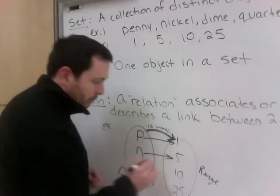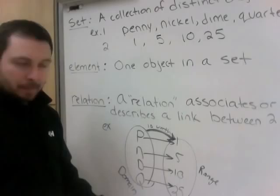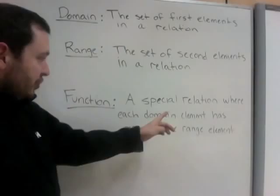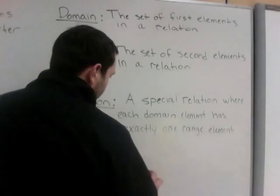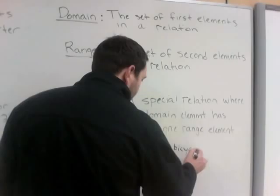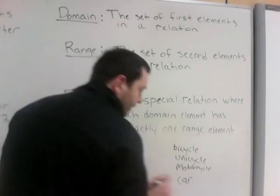Next is a function. A function is a special relation where each domain element has exactly one range element. We can see that with our coins: a penny is worth one cent, a nickel is worth five cents, a dime is worth ten, a quarter is worth twenty-five. Each domain has only one range.